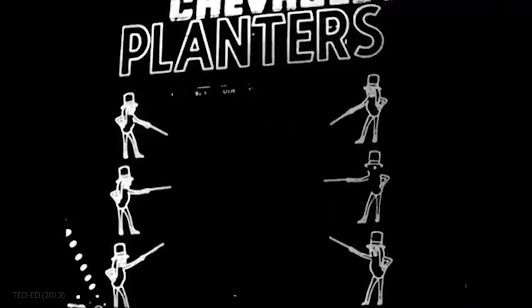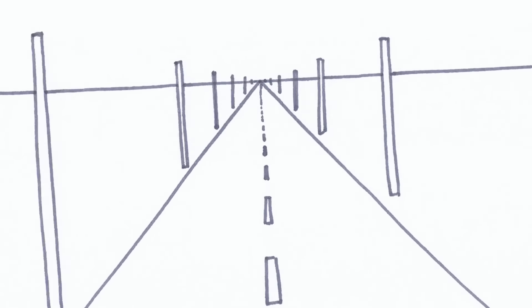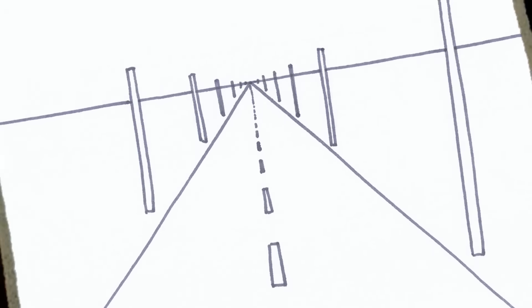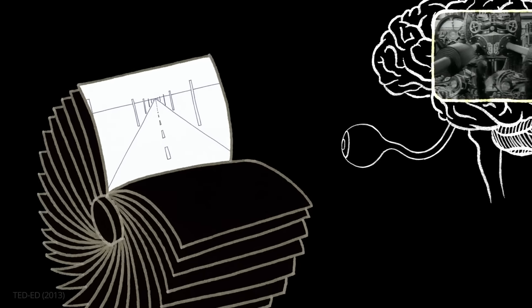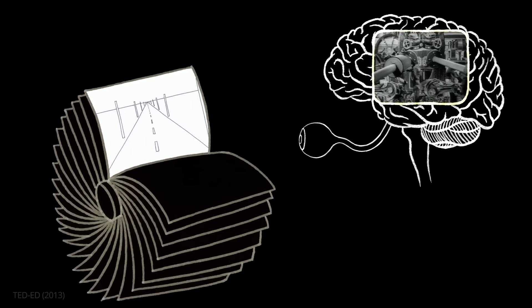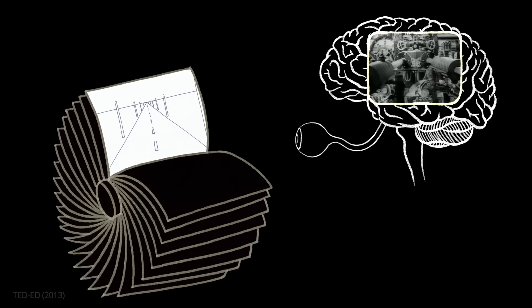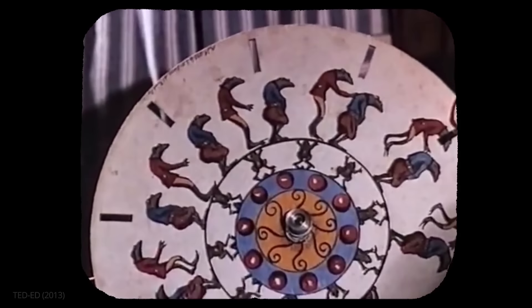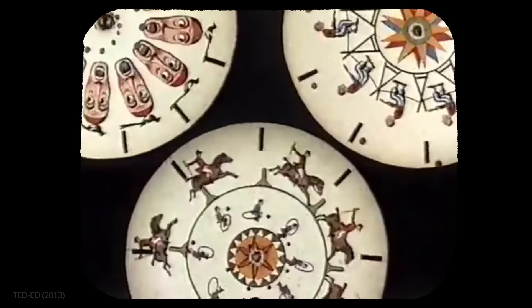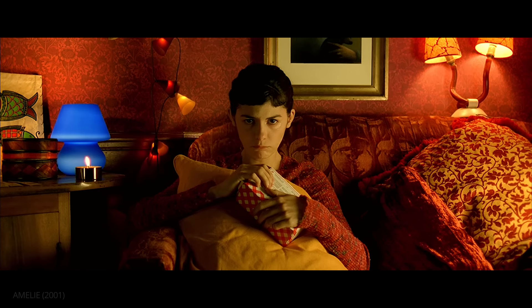There are a couple of theories on how this works: the phi phenomenon, beta movement, and persistence of vision. But the short answer is that when images are shown fast enough, our brain loses the ability to see individual frames and blends them together into a single moving image. Persistence of vision is the principle which makes movies possible.